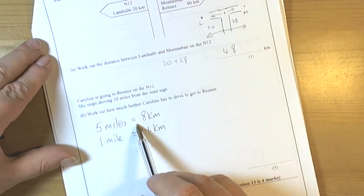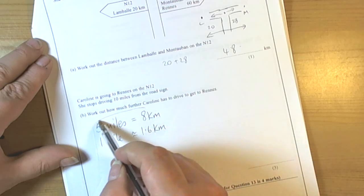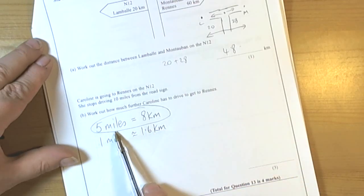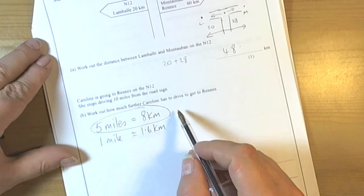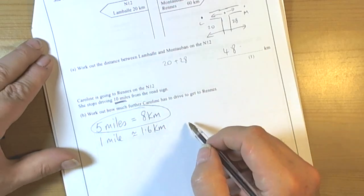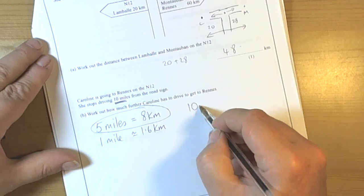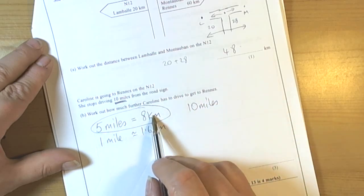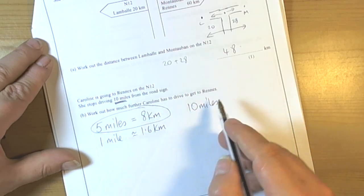Now quite often in these exam questions, this is the fact that is quicker to use. And as it happens in this case, because they told us we were working with 10 miles, we should be able to quickly see that 5 miles is 8, so 10 miles must be double that.